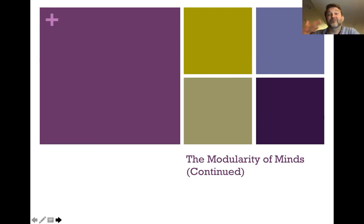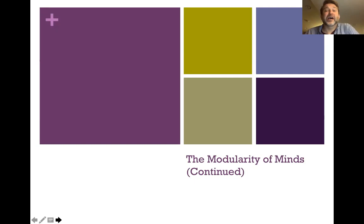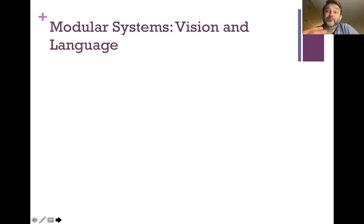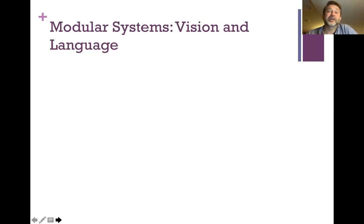Today I'm going to talk about some of the other features of modules that were identified but seem less well supported than we might have thought. Some of those we're going to think about are things like neural specificity and ontogenetic development — a kind of standardized development across the course of a child's life. We'll also look at why the mind would have evolved to be a modular system. Two particular areas of cognition that have been well studied from the modular point of view are vision and language. It's thought that these System 1 processes of vision and language are really realized by these kind of modular subsystems.